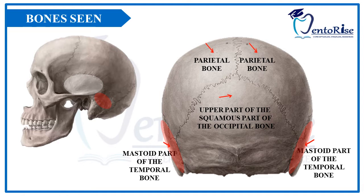The part of the bone present near the mastoid process, marked in the figure with a green arrow, is called the mastoid part of temporal bone, marked in the figure in red.